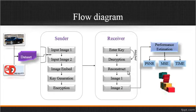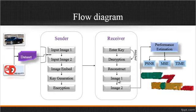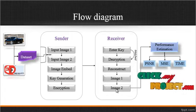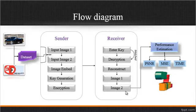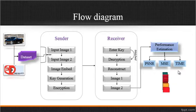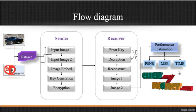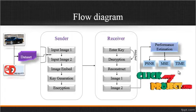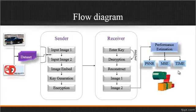After reconstruction, we retrieve the two output images, which are similar to input image 1 and input image 2. After getting these two outputs, we estimate the performance using PSNR, MSE, and time. PSNR is the Peak Signal-to-Noise Ratio and MSE is the Mean Square Error. We also estimate the time for embedding, encryption, decryption, and reconstruction. After calculating these three parameters, we can justify whether the process is efficient or not.